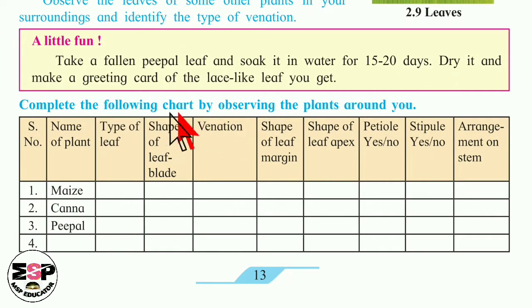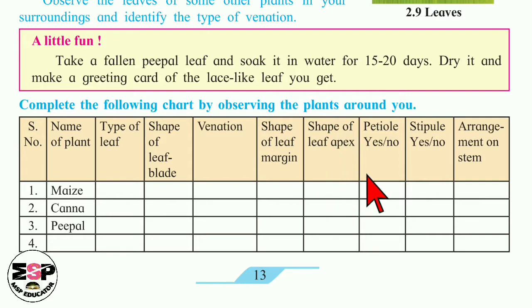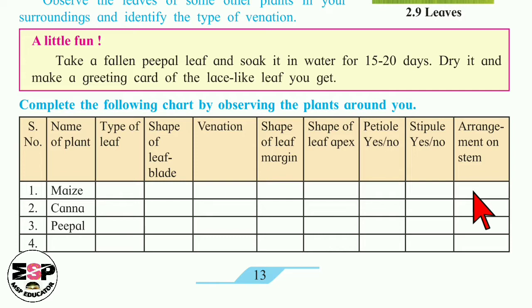Now, complete the following chart by observing the plants around you. Some plants are given and you need to complete this chart by observing their leaves. The columns are: name of the plant, type of leaf, shape of leaf blade, venation, shape of the leaf margin, shape of leaf apex, petiole (yes or no), stipule (yes or no), and arrangement on stem. Do this activity, children.